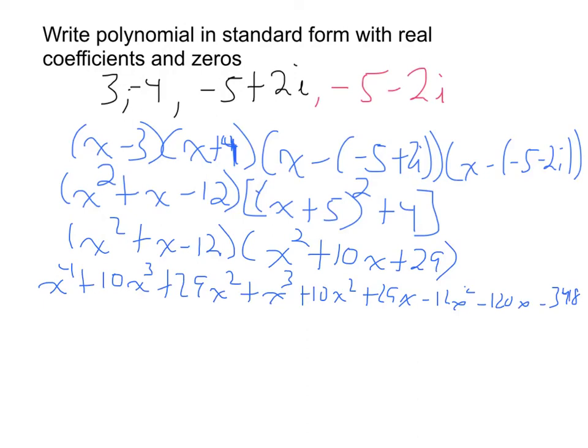And when it's all said and done, it's going to look like x to the fourth plus 11x cubed plus 27x squared minus 91x minus 348.